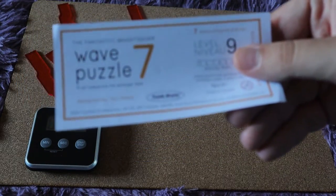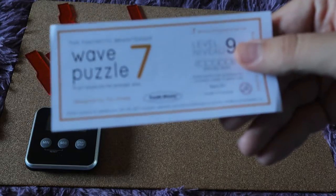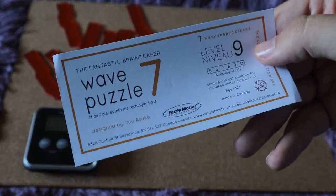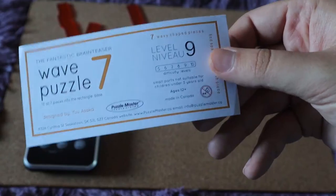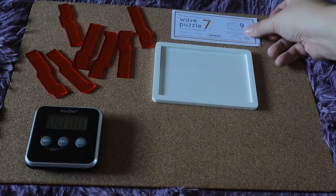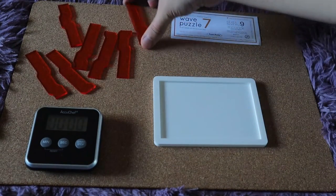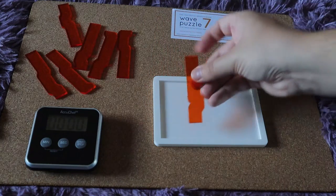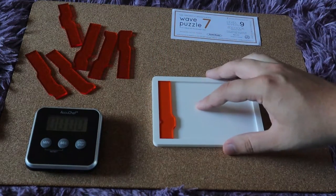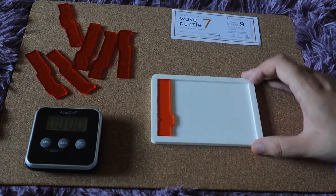This is Wave Puzzle No. 7 from Puzzle Master. It is made by UASCA. This is level 9 on the difficulty scale. The object is to fit all of these orange pieces into the white square and fill it.